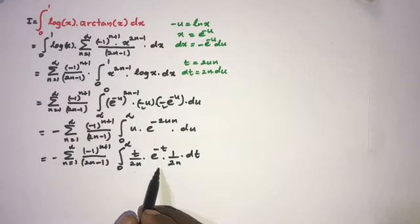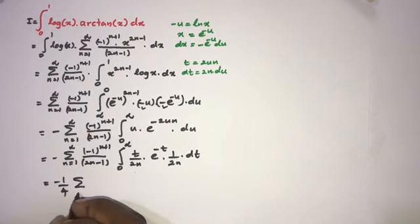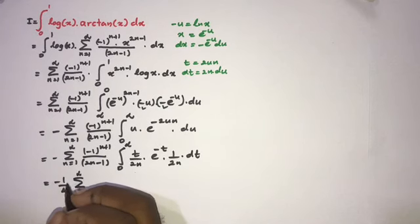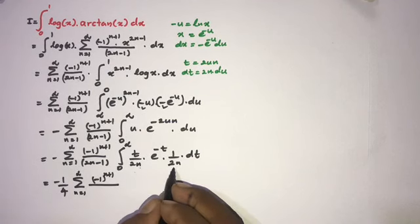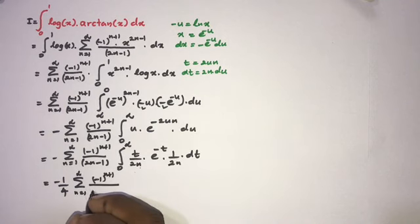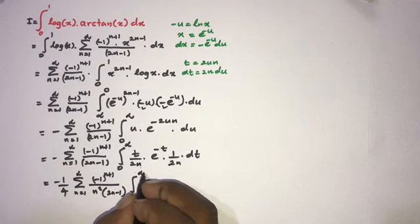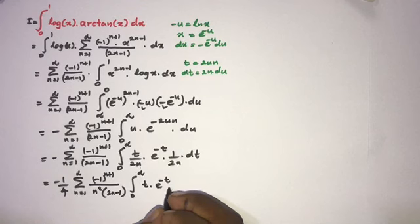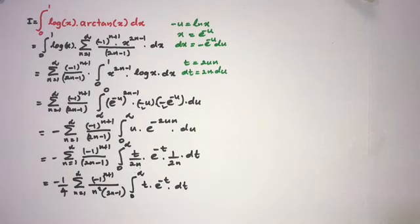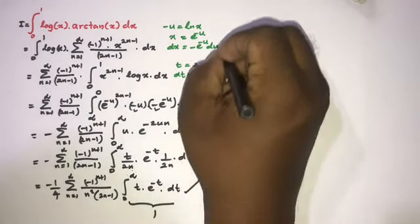After simplification, the 2n factors combine to give -1/4 times the infinite sum from n=1 to infinity of (-1)^(n+1) over (n^2(2n-1)), times the integral from 0 to infinity of t·e^(-t) dt. This last integral equals 1 (the Gamma function value).